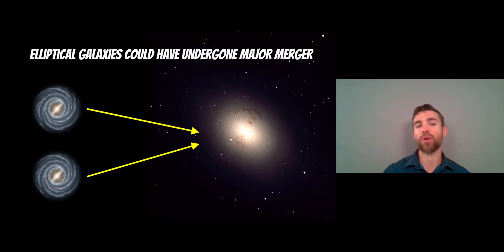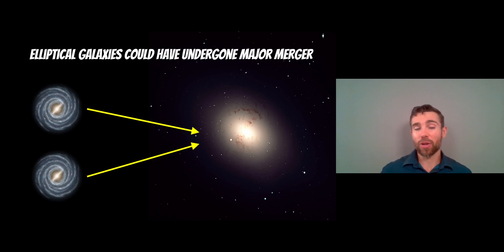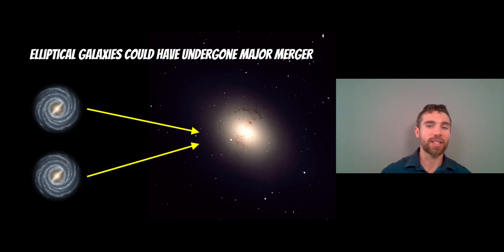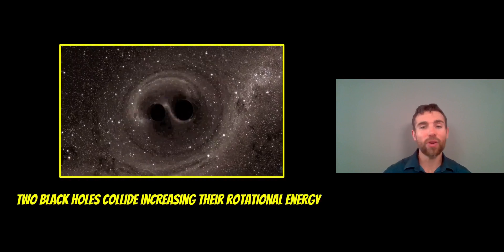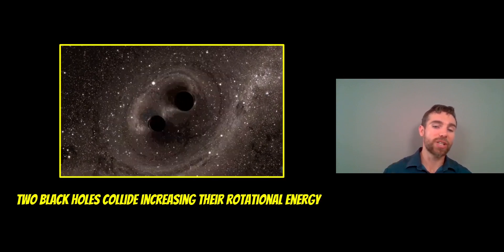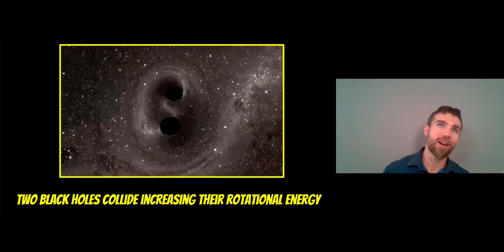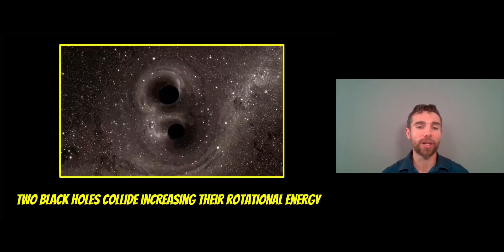Elliptical galaxies, if we look at how they actually form, likely form from major mergers — for example, two spiral galaxies colliding and growing into a larger elliptical galaxy, depleting the gas and losing the disc structure. Assuming each spiral galaxy had a supermassive black hole at the centre, there are then two black holes that need to become one in the elliptical galaxy. As those two black holes collide and merge into one, it significantly increases their rotational energy, which then in turn powers more powerful jets for these quasars. That's the main difference between why one hosts a radio loud quasar and the other a radio quiet quasar.